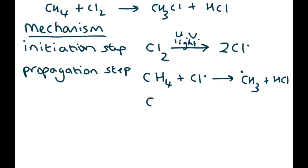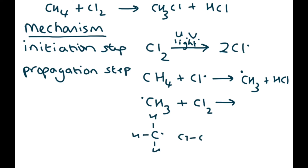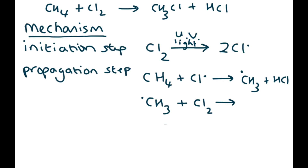The second propagation step takes the CH₃ radical, which reacts with another Cl₂ molecule. One electron from the Cl–Cl bond forms a bond with the carbon and one goes back to the other chlorine. This gives us CH₃Cl and regenerates the chlorine radical.